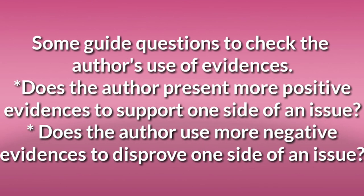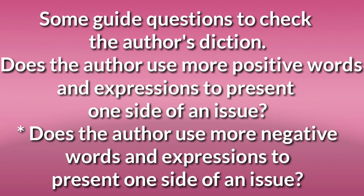There are some good questions to check the author's use of evidence. First, does the author present more positive evidences to support one side of an issue? Or does the author present more negative evidences to disprove one side of the issue? There are also good questions to check the author's diction: does the author use more positive words and expressions to present one side of an issue? Or does the author use more negative words and expressions to present one side of an issue?